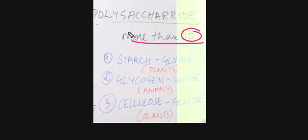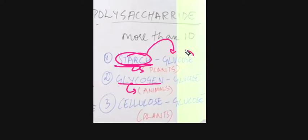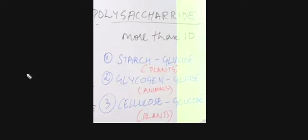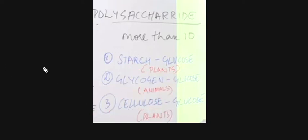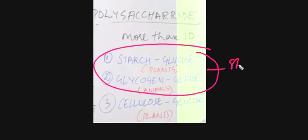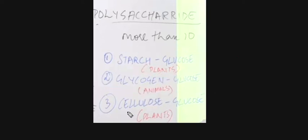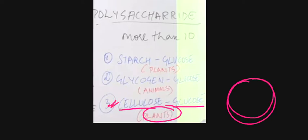If polysaccharides are more than ten units of saccharides, you will call them polysaccharides. Starch is only in plants, and glycogen is only in animals. Starch, glycogen, and cellulose are all made with glucose. Starch and cellulose are only in plants, and glycogen is in animals. Starch and glycogen function as storage — glucose is stored as glycogen in our body and as starch in plants. Cellulose is also only found in plants.